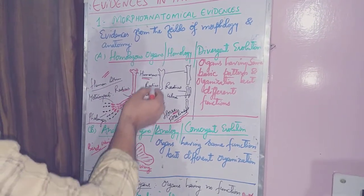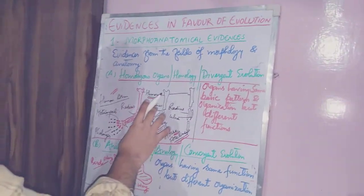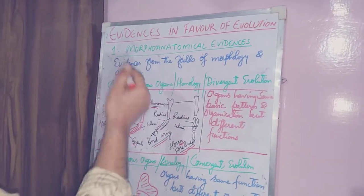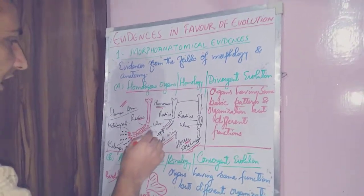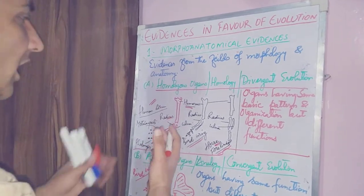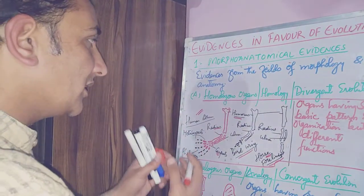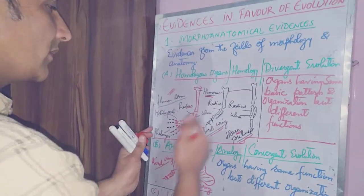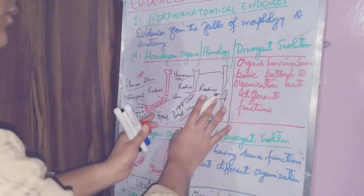In the bird wing you will see the same bones are present, although their structure is a bit different. There is the humerus, radius, ulna, carpals, and metacarpals. There are also phalanges, with a little difference in size, but the bones are the same.